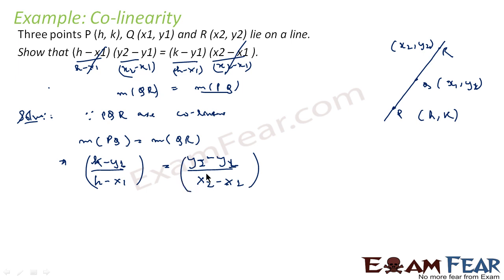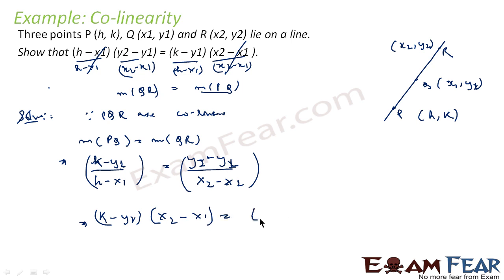So from this equation, if you cross multiply, what you get is: K minus Y1 times X2 minus X1 equals Y2 minus Y1 times H minus X1. And that is exactly what we were asked to show. So we have proved it.